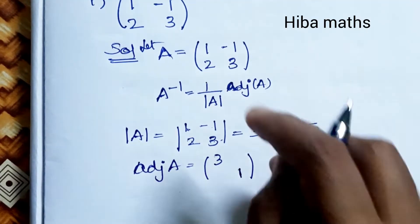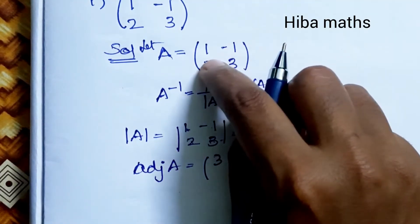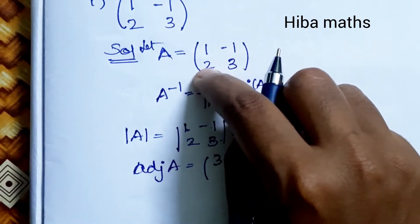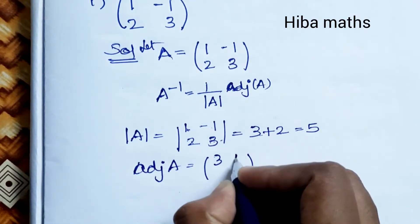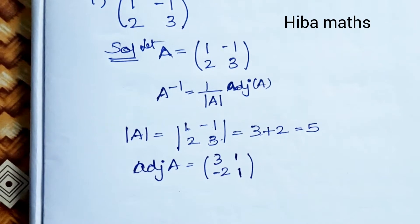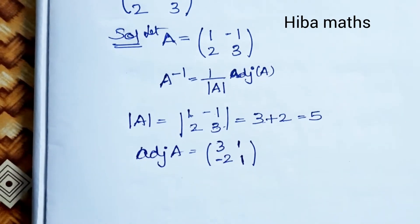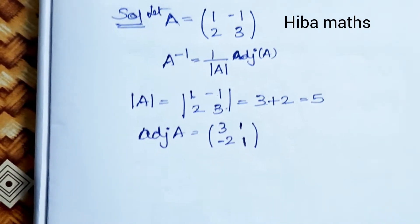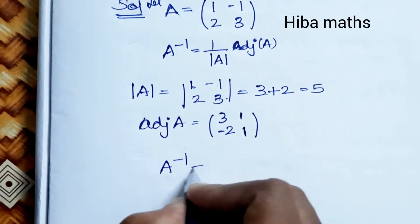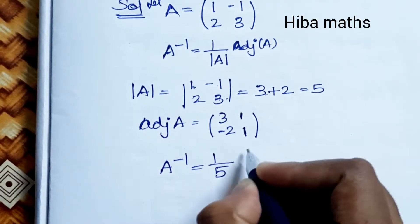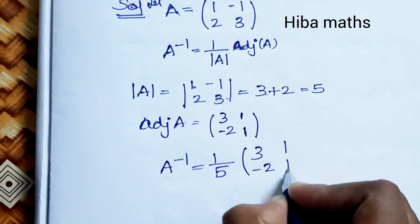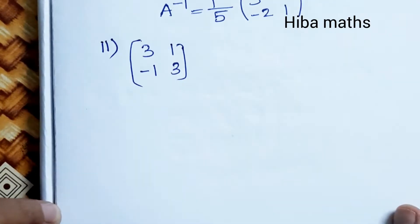For the 2×2 adjoint, swap the diagonal elements and change the signs of the off-diagonal elements: the adjoint of A is [3, 1; -2, 1]. Therefore, A inverse = (1/5) × [3, 1; -2, 1].